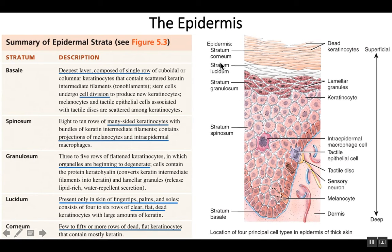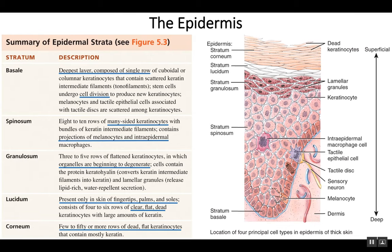The next layer is the stratum lucidum. One major thing about this layer is it's not found everywhere — only in the fingertips, palms, and soles of the feet. Everywhere else you have four layers of epidermis, but in those areas there is this additional stratum lucidum. The cells are completely dead and have lost most of their organelles, so they look very clear — 'lucidum' means clear. The cells are four to six rows but very flat, and they offer quite a bit of protection.